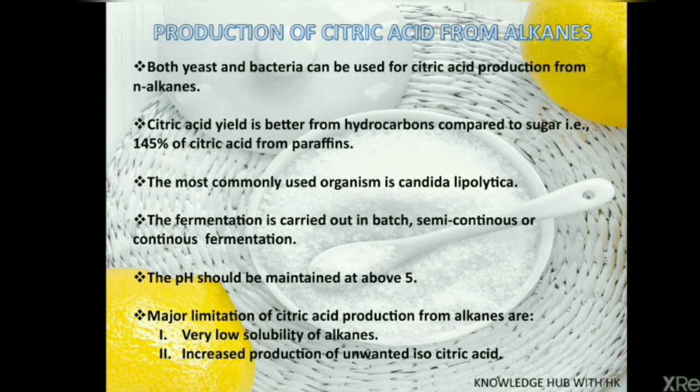Production of citric acid from alkanes: both yeast and bacteria can be used for citric acid production from n-alkanes. Citric acid yield is better from hydrocarbons compared to sugar, yielding 145% of citric acid from paraffins. The most commonly used organism is Candida lipolytica. The fermentation is carried out in batch, fed-batch, or continuous fermentation. The pH should be maintained above 5. Major limitations include increased production of unwanted isocitric acid and very low solubility of alkanes.